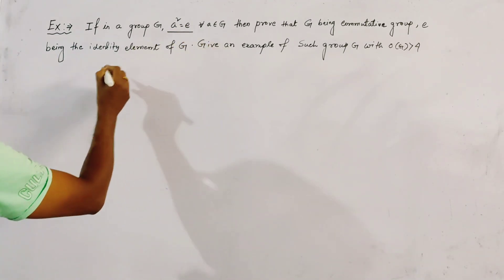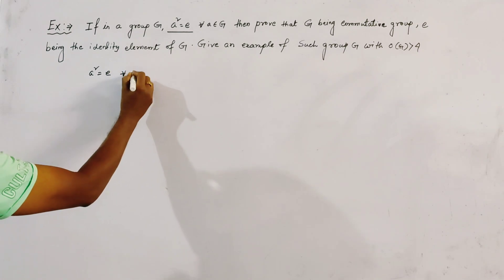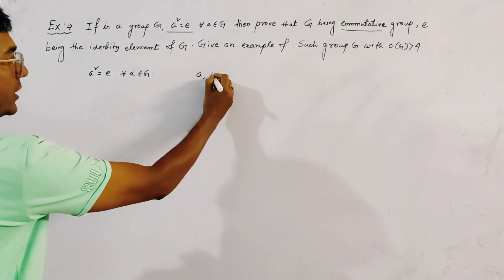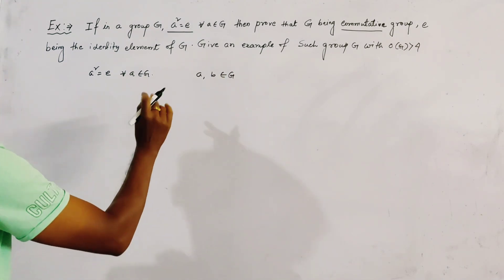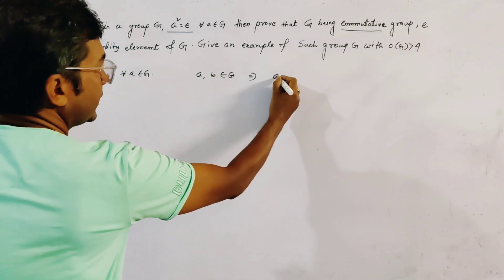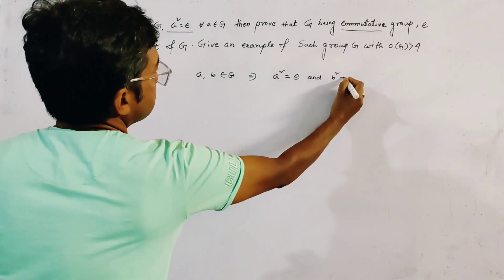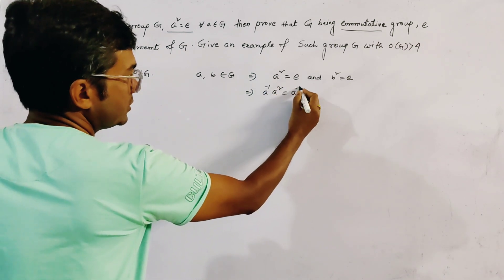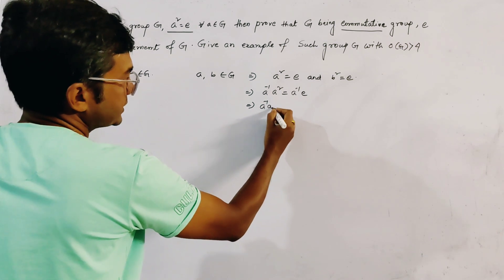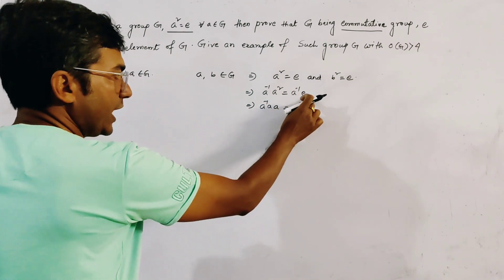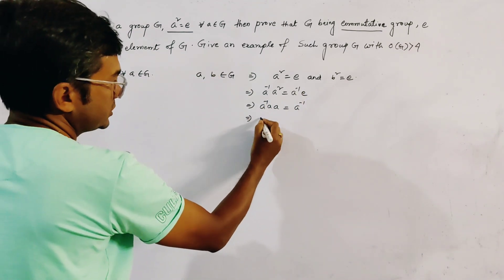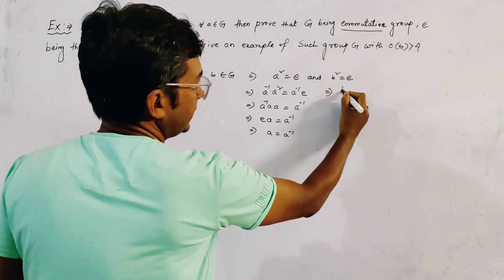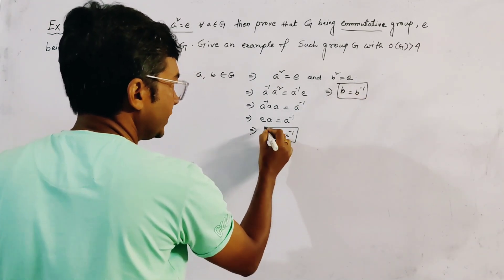It is given that a² = e for all a belongs to G. To prove G is commutative, let at least two elements a and b belong to G. Since a and b belong to G, we write a² = e and b² = e. Since a² = e, we get a⁻¹·a² = a⁻¹·e, that is a⁻¹·a·a = a⁻¹, which gives e·a = a⁻¹. So a = a⁻¹, and similarly b = b⁻¹.